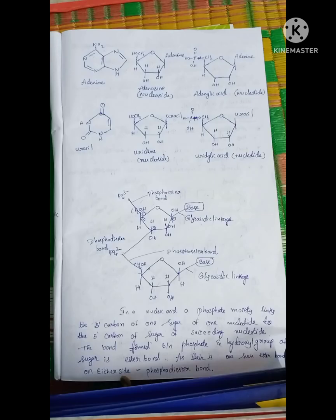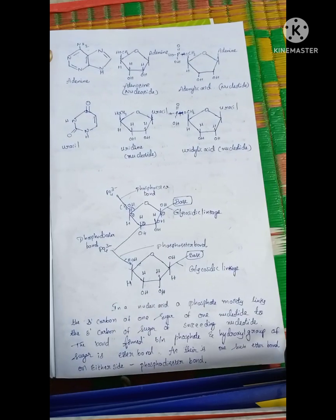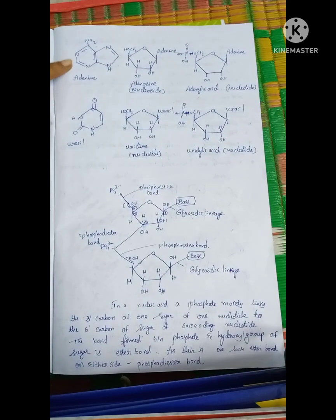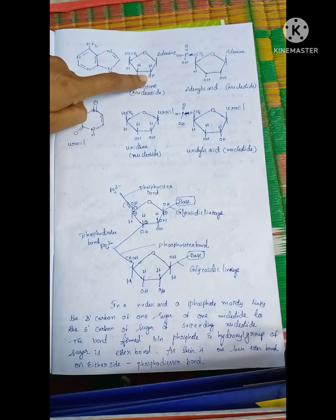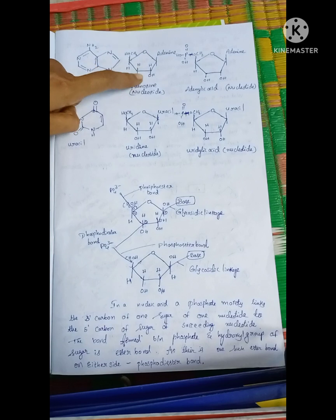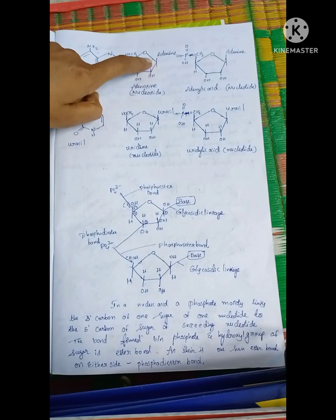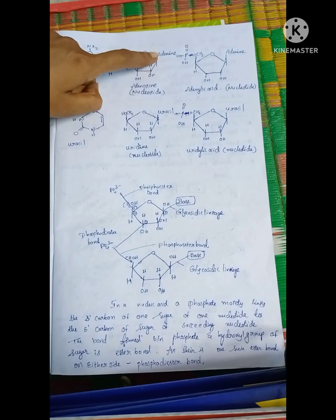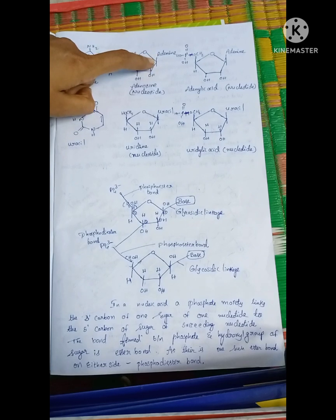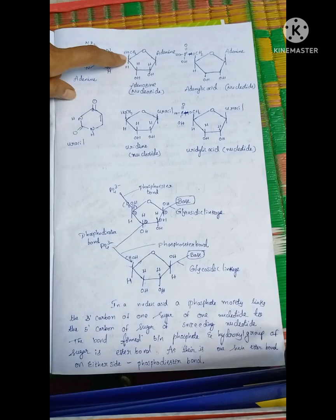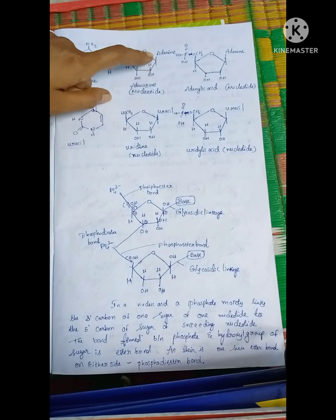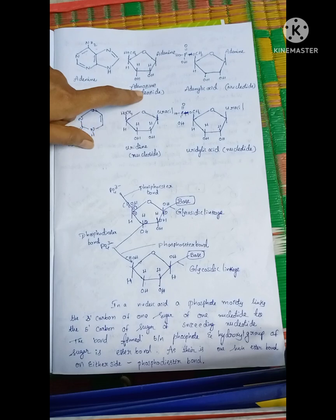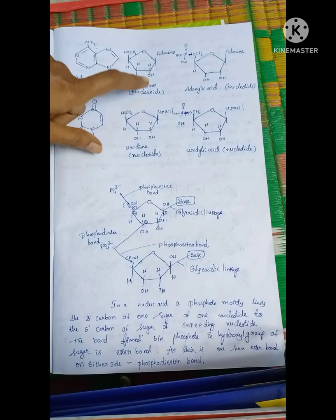Looking at the chemical structure: adenine is the base, ribose sugar is attached at the first carbon place by glycosidic linkage. The combination of ribose sugar plus base gives a nucleoside. For adenine, this nucleoside is called adenosine.